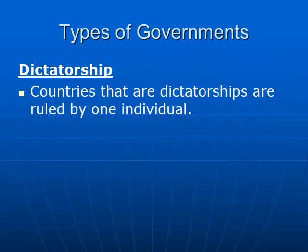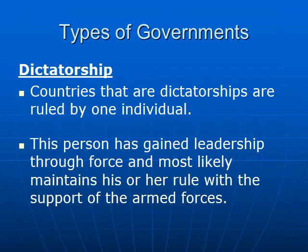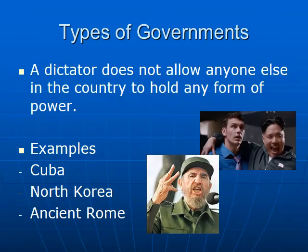Dictatorship. Dictatorships generally have one person in charge of everything — the whole country. Perhaps this person gained leadership through force and they use the army to support their rule. A dictator doesn't allow anyone else in the country to hold any form of power. Currently Cuba, North Korea, and even ancient Rome are examples of a dictatorship.